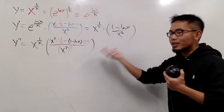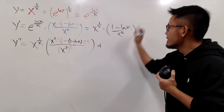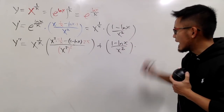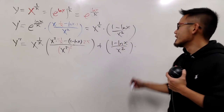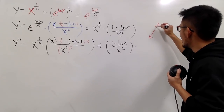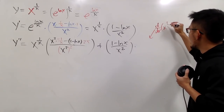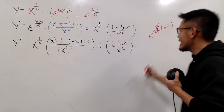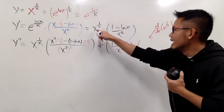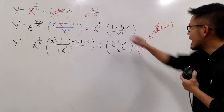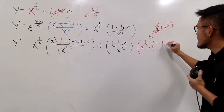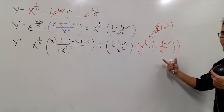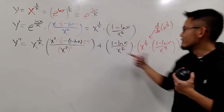That's the first part of the product rule. Then we add the second part, which is 1 minus ln x over x squared, times the derivative of the first function. The derivative of x to the 1 over x power is just what we found before — x to the 1 over x, times 1 minus ln x over x squared.